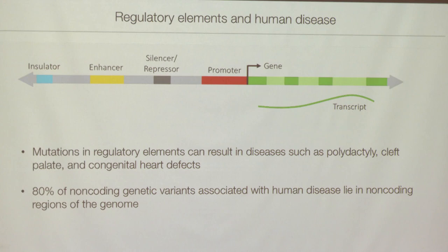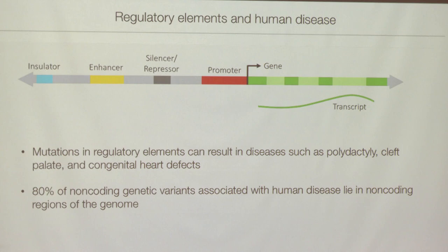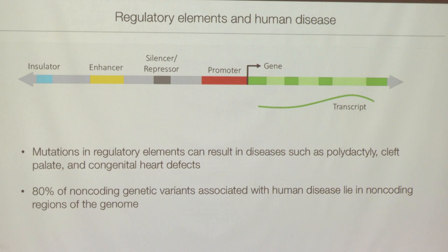If you look at mutations in the vast spans of the genome, it's like looking for needles in a haystack. However, if you focus on the regulatory regions — a very small portion of the genome — more than 80% of the non-coding genetic variants associated with human diseases lie in non-coding regions and are very much focused in regulatory elements. That is why we want to annotate regulatory elements and understand their function, so we can focus our efforts on diseases associated with non-coding genetic variants.